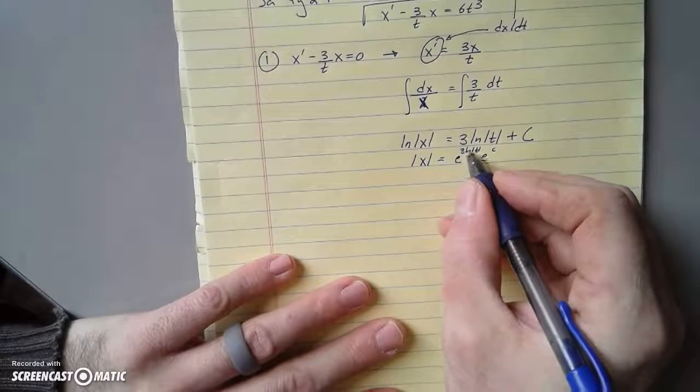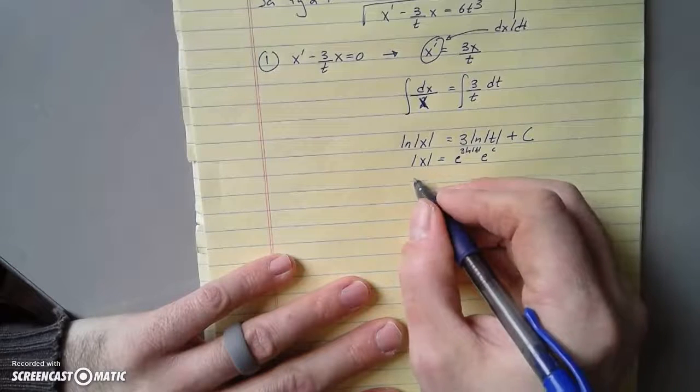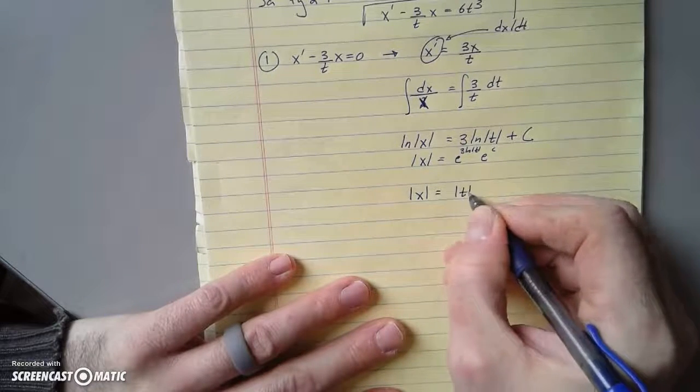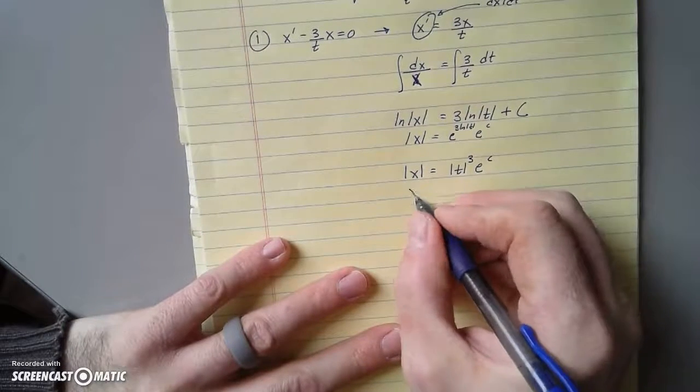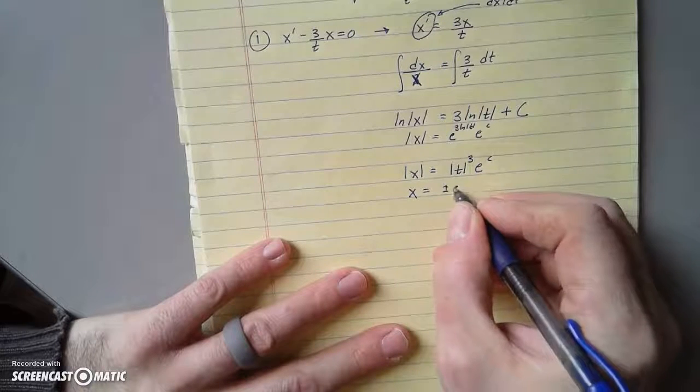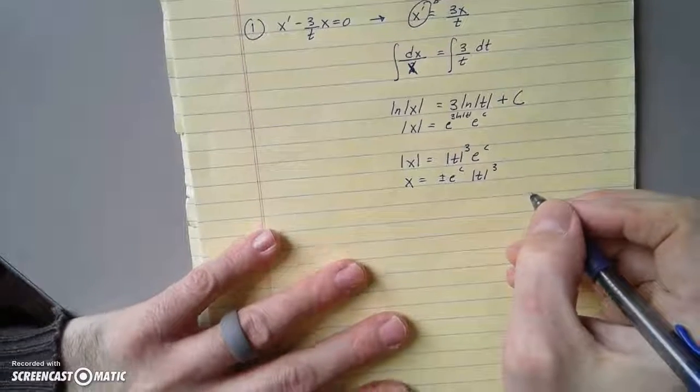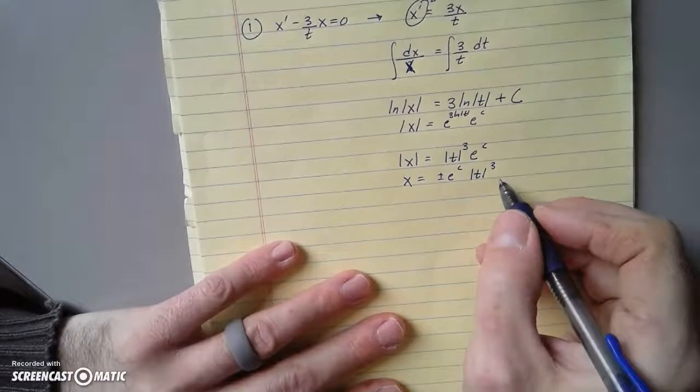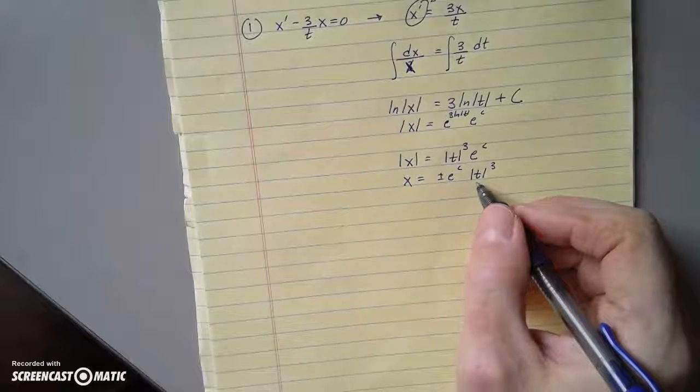Exponentiate both sides. We'll get absolute value of x equals e^(3 ln|t|) e^c. Now we can't do anything with this until we bring the 3 inside. So this would look like |x| = |t|^3 e^c.